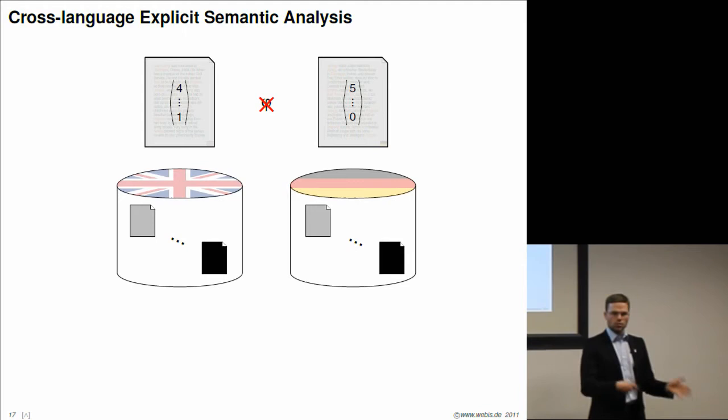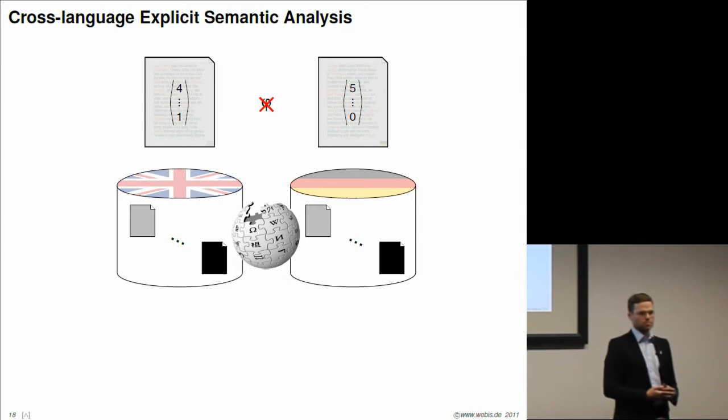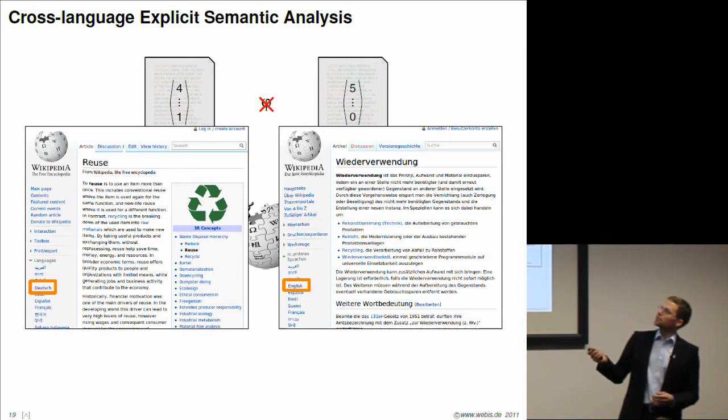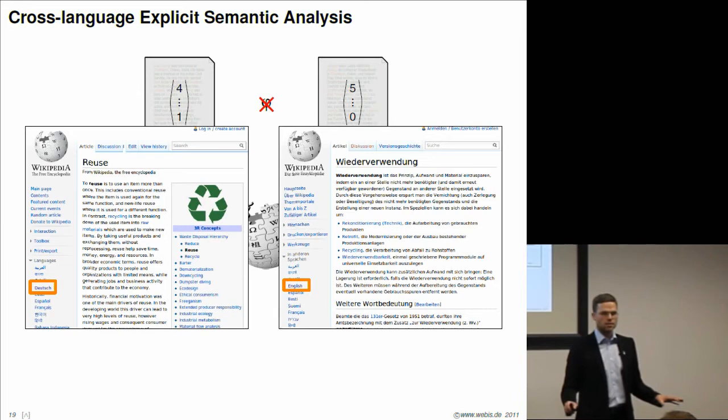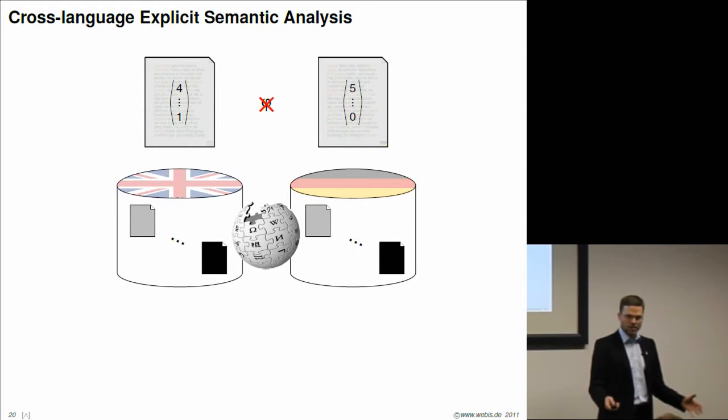These two document collections have to come from the languages of the original documents. These document collections can be small or big. They can be sized up to 100,000 documents, and they have to have a special property. For each document appearing in this collection, there must be a paired-up document which talks about the same topic. So where can we find these documents? Wikipedia is a very good source for this. There are the two Wikipedia articles about reuse and, in German, Wiederverwendung. They are the same concepts. They talk about it exhaustively and are linked across languages.